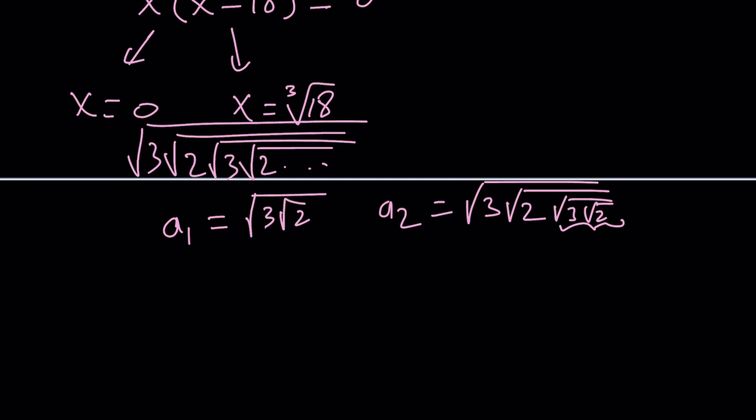But does that mean it converges? No, it could diverge. But this one doesn't. So what does that mean? That means x equals 0 is not acceptable, which means we're going to go with the cube root of 18.